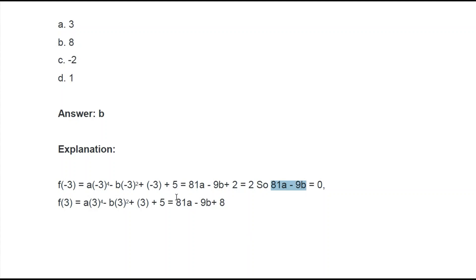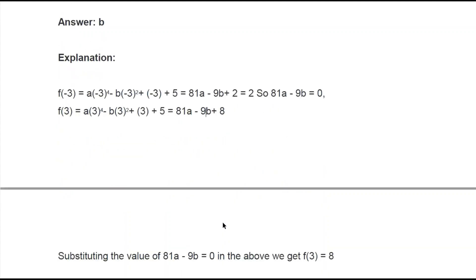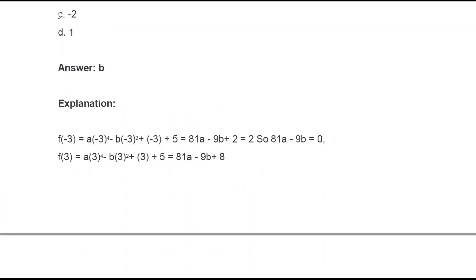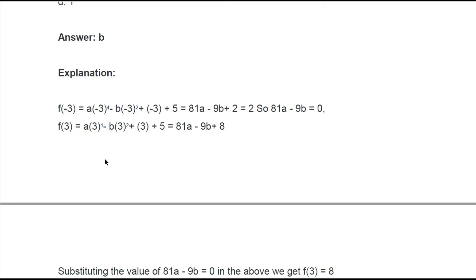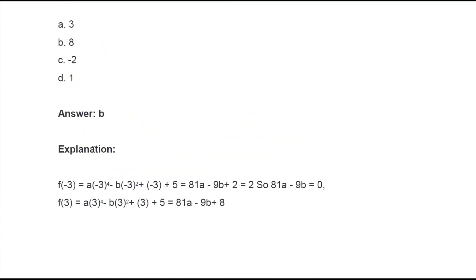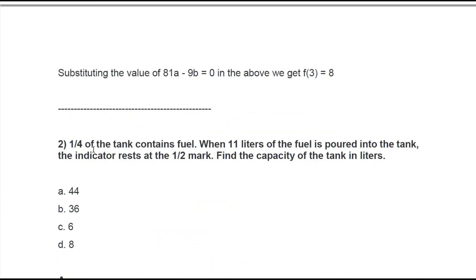From the first equation we already got 81a - 9b = 0, so we can write 0 in place of that. This leads to the answer 0 + 8, which means f(3) = 8. So 8 is the answer, and yes, it is option b.